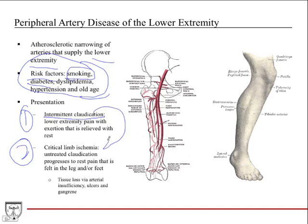Critical limb ischemia is when untreated claudication progresses to pain felt in the leg or feet even when resting — similar to unstable angina versus stable angina. The major concern here is tissue loss via arterial insufficiency: ulcers and gangrene. These patients often have ulcers on their feet or the soles of their feet — very serious.